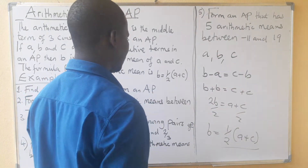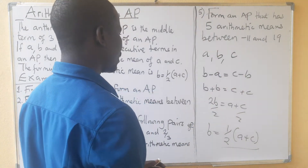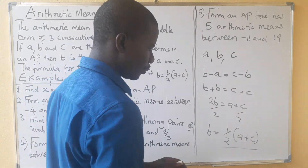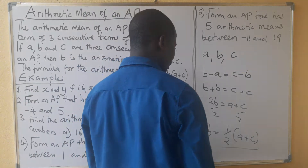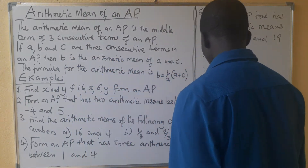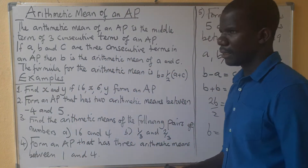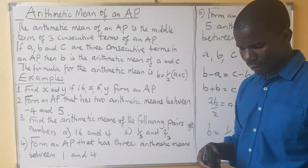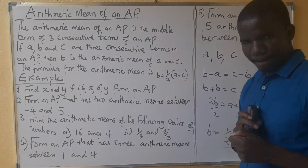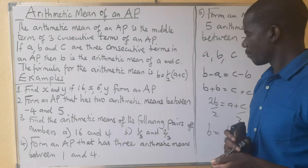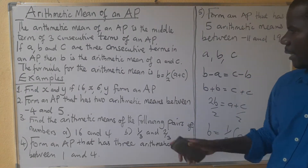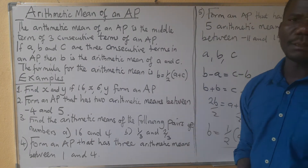Dividing both sides by 2, B equals ½(A + C). That is where the formula is coming from. This is the formula that we use to find the arithmetic mean.